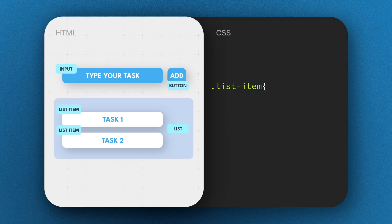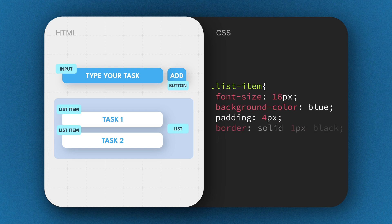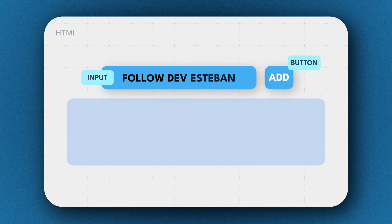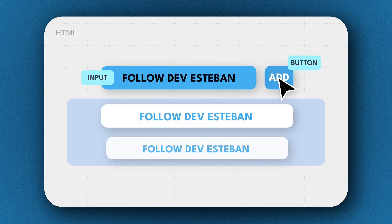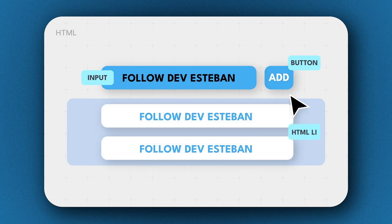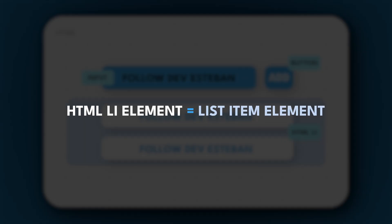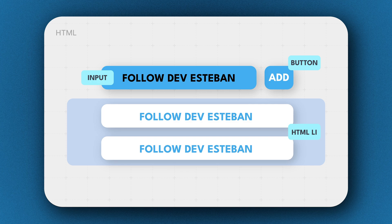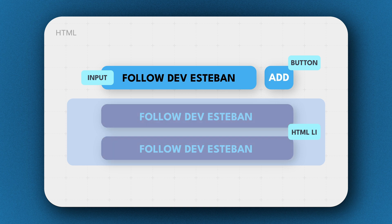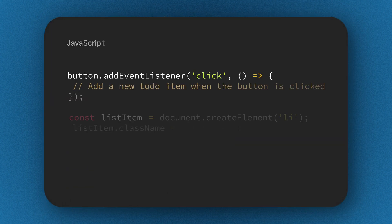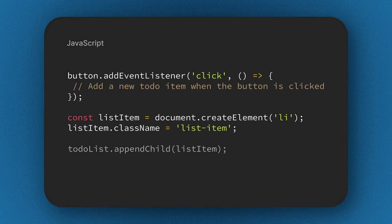In our CSS we create a class 'list-item' and within it we assign some properties like font size, background color, padding, and border. Whenever we type something in the input and click the add button, we create a new HTML li element — a list item — and assign a class to it so the new item is displayed with some styling. This is then added to our current list to be displayed.